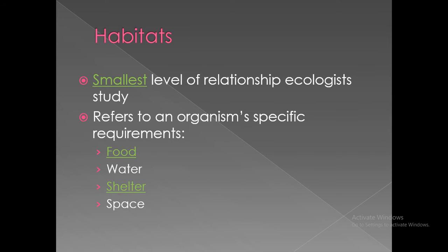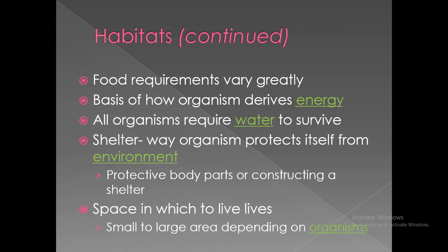Habitats: The smallest level of relationship an ecologist studies. It refers to an organism's specific requirements like food, water, shelter, and space. Food requirements vary greatly according to the needs of the animals, based on how an organism derives energy. All organisms require water to survive. Shelter is the way an organism protects itself from the environment.